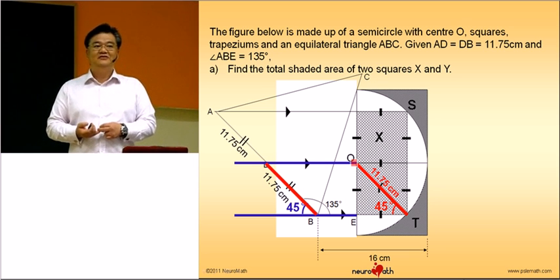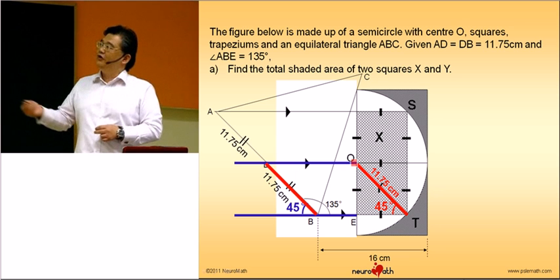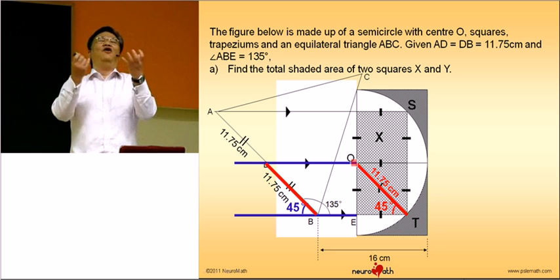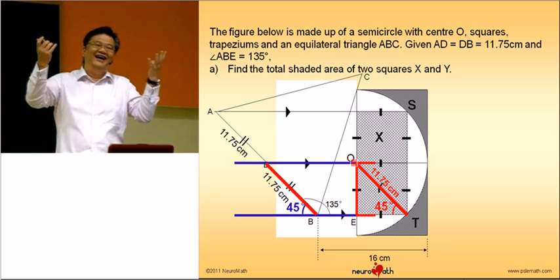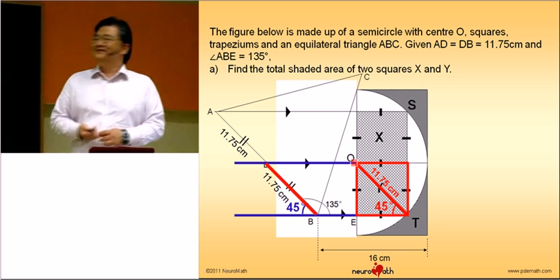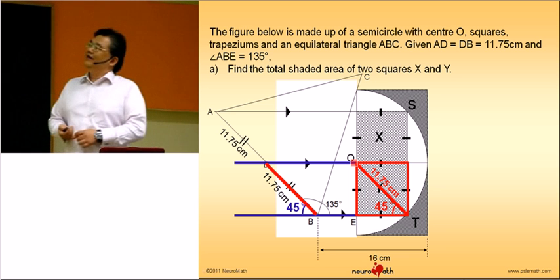11.5. That's right. So, if you know that the diagonal is 11.75, are you able to find the area? See, that's always the case, right? Okay, come right here.